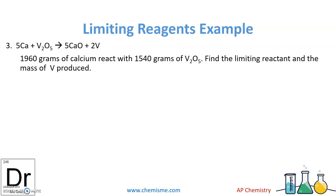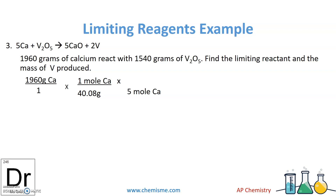Let's try it all together one more time. Five calciums and one V2O5 react to form five calcium oxides and two vanadiums (V). With 1960 grams of calcium and 1540 grams of V2O5, which one limits and how much V can we make? Starting with calcium: 1960 grams over one, divided by its molar mass of 40.08 g/mol. Calcium has a coefficient of five in the equation, and for every five calciums, I can make two Vs — a five-to-two ratio. Vanadium's molar mass is 50.94 g/mol.